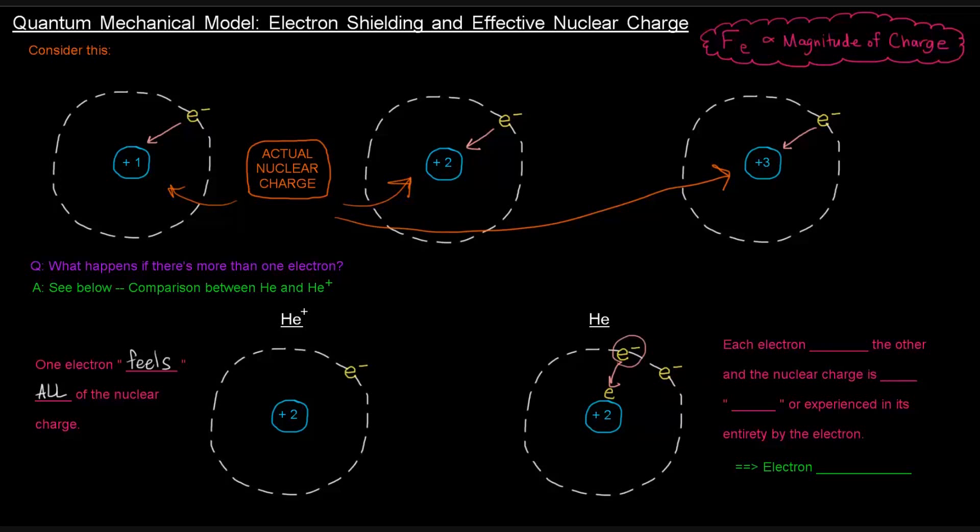So what's happening here is that each electron shields the other from getting closer to the nucleus.